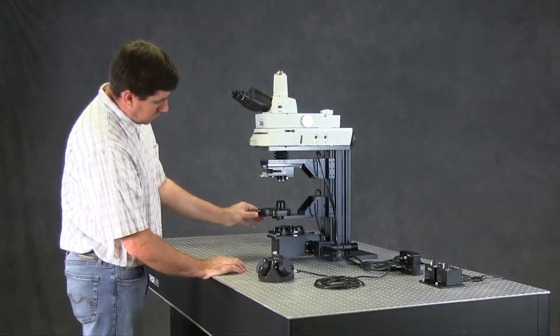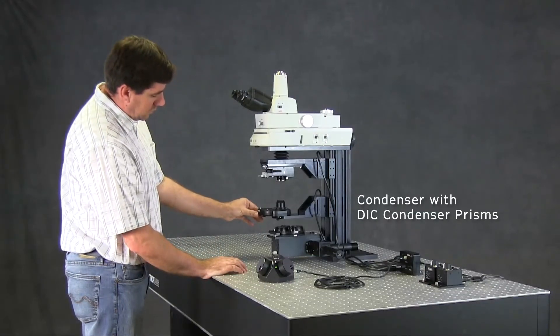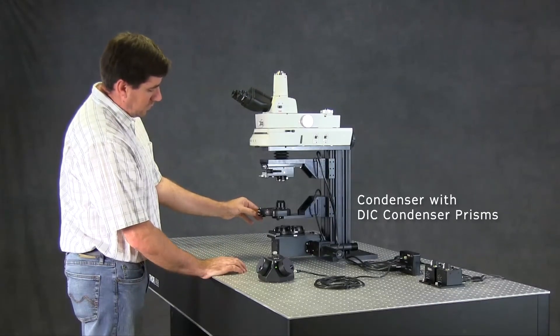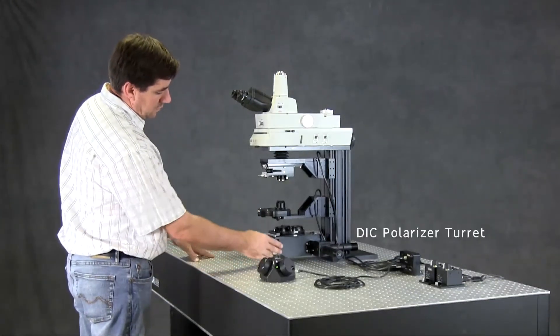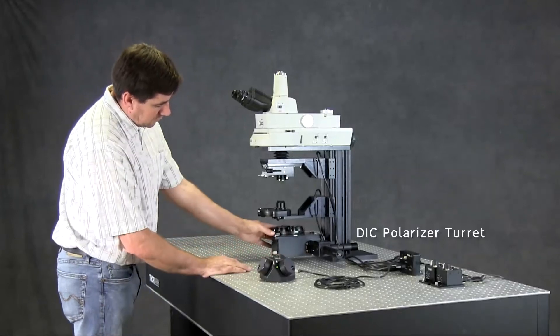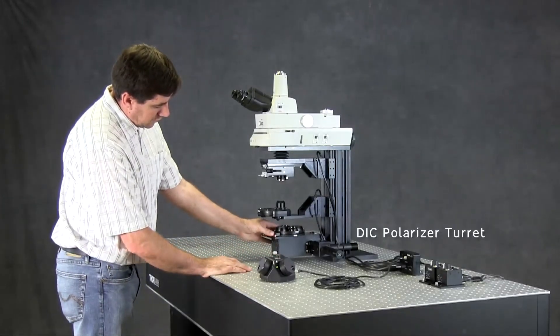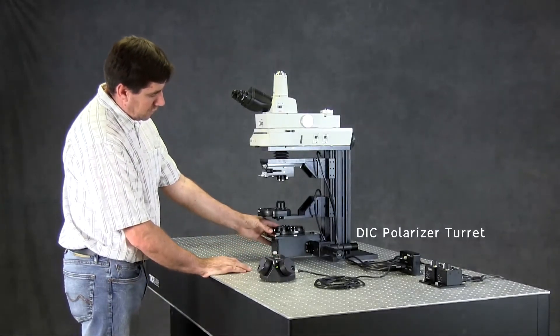Underneath the objective are a polarizer turret and condenser. The condenser includes N1 and N2 condenser prisms, and the polarizer turret, located on top of the transillumination module, includes rotatable visible and near-infrared DIC polarizers.